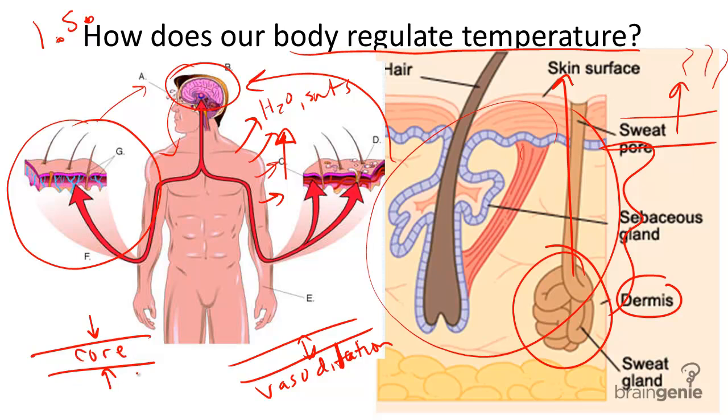And the second thing that happens is we are going to halt the production of sweat. And the third thing that is going to happen is we are going to tell our muscles to shiver or to involuntarily contract. And these involuntary muscle contractions known as shivering helps us increase the heat generation in our body.